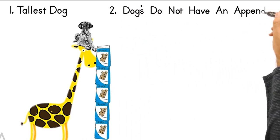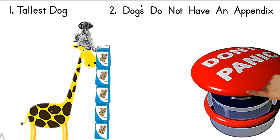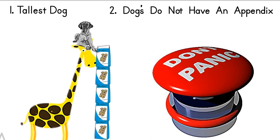2. Dogs Do Not Have an Appendix. Don't worry about your dog getting appendicitis, this is because your pooch doesn't have one. Dogs do have a cecum, which is similar to an appendix.